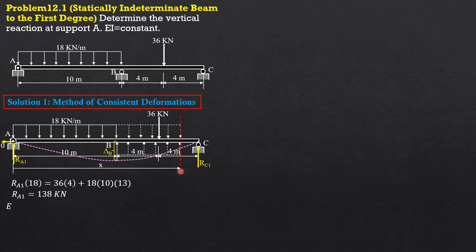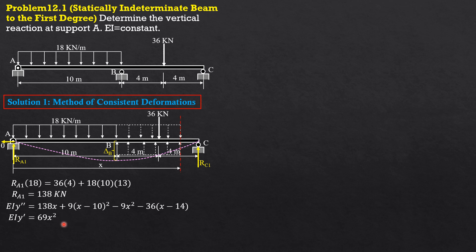The differential equation of the elastic curve: EIy'' equals 138 times x plus 18 times (x − 10) divided by 2, or 9(x − 10)². That's the equation of the elastic curve. Integrating once: EIy' equals 138/2 or 69x² plus 3(x − 10)³ minus 3x³ minus 18(x − 14)² plus C₁.